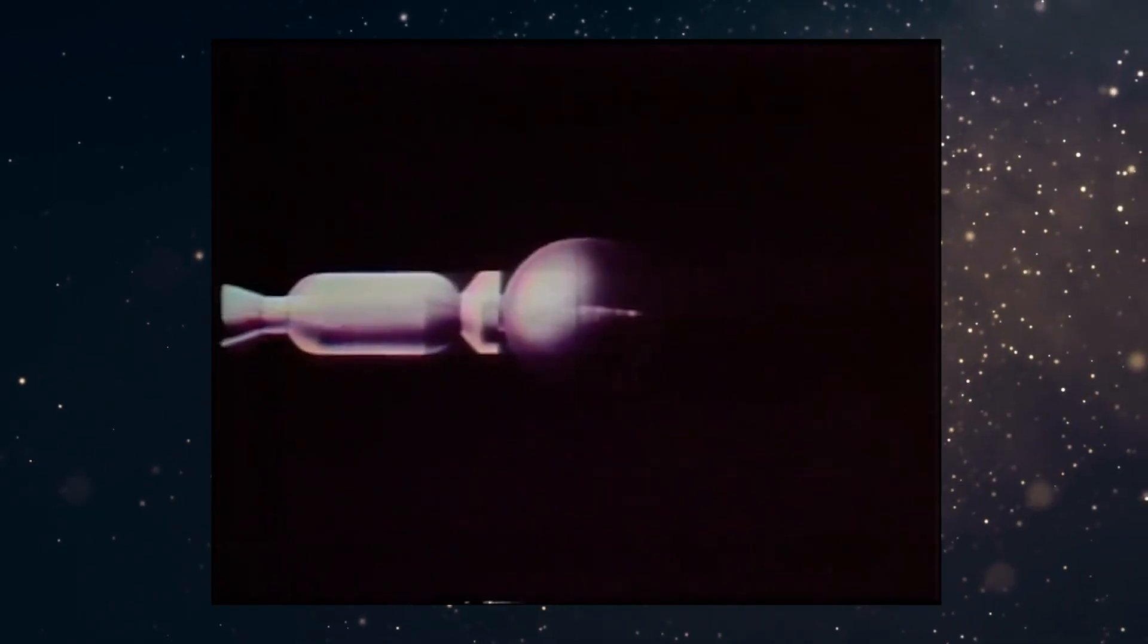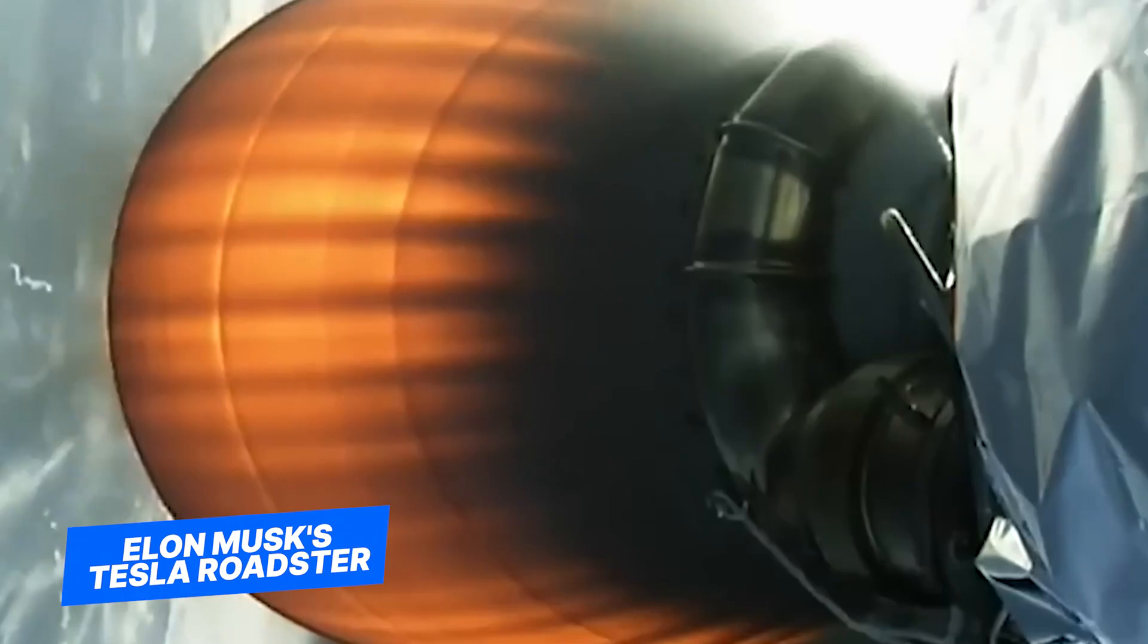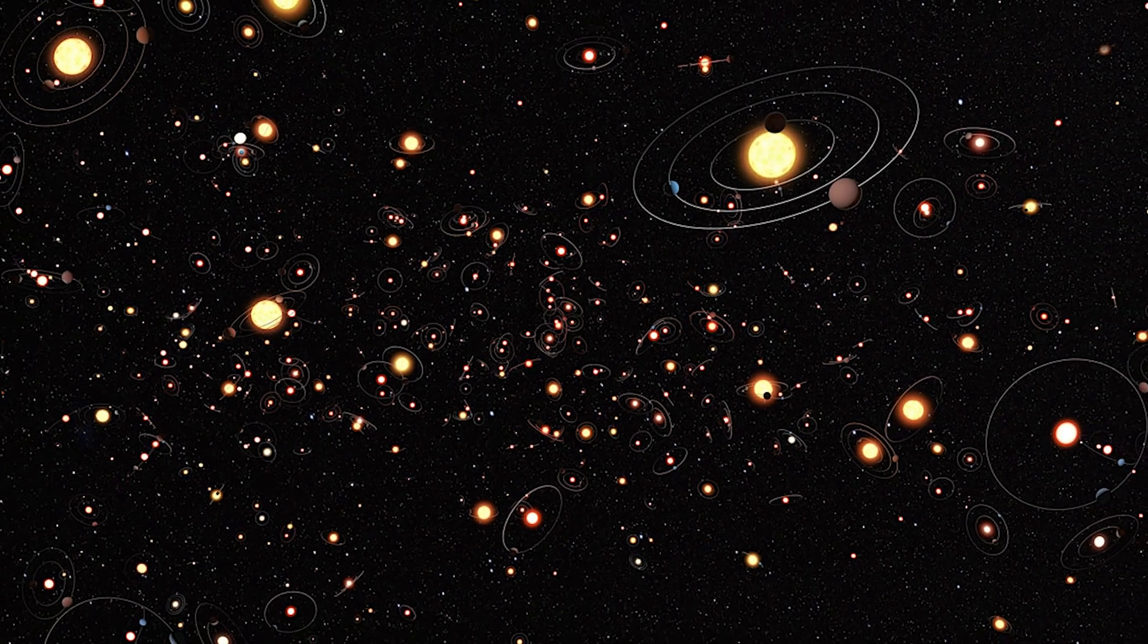We've been launching stuff into space since the 1960s. Just this year, astronomers accidentally catalogued Elon Musk's Tesla Roadster as an asteroid before realizing it was a car we launched in 2018. If we can barely recognize our own technology in space, how would we recognize someone else's?